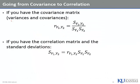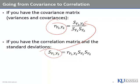Here's your covariance and here's your correlation. If you want to take the covariance between two variables and find its correlation, you divide it by the standard deviation of the first times the standard deviation of the second. Likewise, if you have the correlation and want the covariance, you multiply by the standard deviations of both variables.